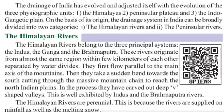The Indian drainage system has three physiographic units: the Himalayas, the Peninsular Plateau region, and the Indo-Gangetic Plain. On the basis of its origin, the drainage system in India is classified into two categories: Himalayan rivers and Peninsular rivers. The Himalayan rivers belong to three principal systems — the Indus, Ganga, and Brahmaputra.